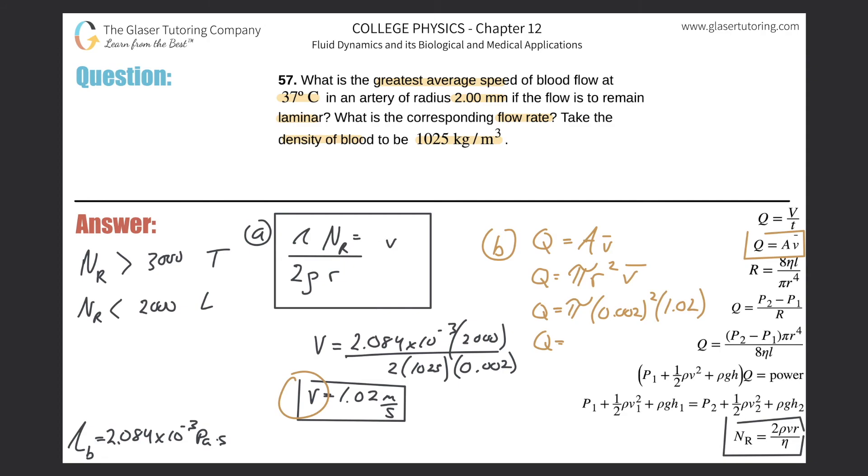After I plug them into the calculator—let me use the more exact value—π times 0.002 squared, multiplied by that exact answer from before for the velocity. It's basically the same thing in terms of rounding.